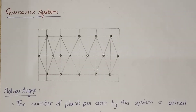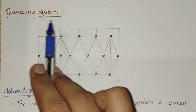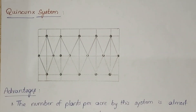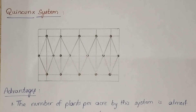The next topic is the quincunx system. Observe this diagram carefully. The system of planting fruit trees is similar to the square system, except that a fifth tree is planted at the center of each square. As a result, the number of trees in a unit area becomes almost double the number in the square system.